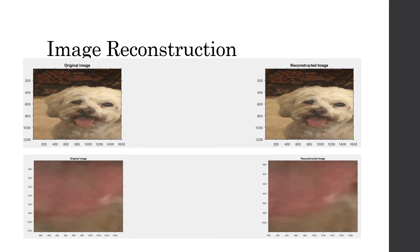For image reconstruction, we convert the YCbCr back to RGB. What we see here is the original image and our reconstructed image. To the naked eye on a zoomed-out computer monitor, we can barely notice a difference between the two images. However, if we zoom in and look carefully, we can see a little bit of blurring. This is because the JPEG compression algorithm is a lossy compression algorithm, and this blurring is due to the removal of the high frequency data during quantization. Thank you for listening to my JPEG compression algorithm presentation.